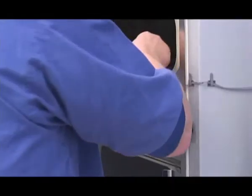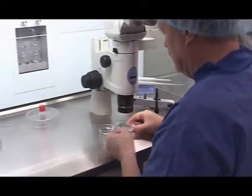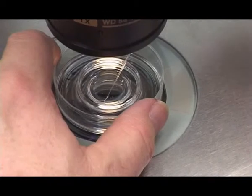Take out the dish with the patient's denuded oocytes from the incubator and place it under the stereo microscope. Wash the pipette several times with culture media.